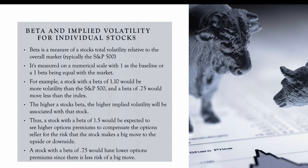Beta is a measure of a stock's total volatility relative to the overall market, typically the S&P 500. A stock with a beta of less than one will be less volatile than the S&P 500, versus a stock with a beta of more than one, which will be more volatile. It's measured on a numerical scale with one as the baseline — equal with the market. A stock with a beta of 1.10 would be more volatile than the S&P 500, and a beta of 0.75 would move less than the index. The higher a stock's beta, the higher implied volatility will be associated with that stock.